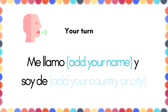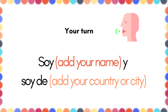And do not worry about saying your city or country in the language which you speak. In future lessons, we can learn how to say city or country in Spanish. Okay, so let's try the second option — Option B. Soy, add your name, y soy de, add your country or city. Now you have a go. Excellent. Well done.